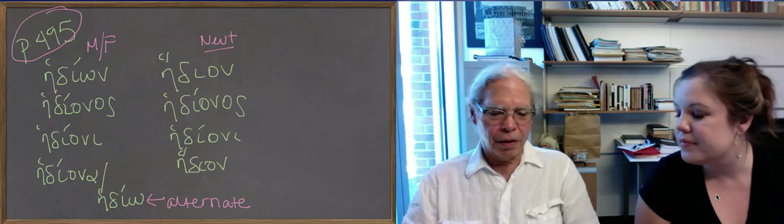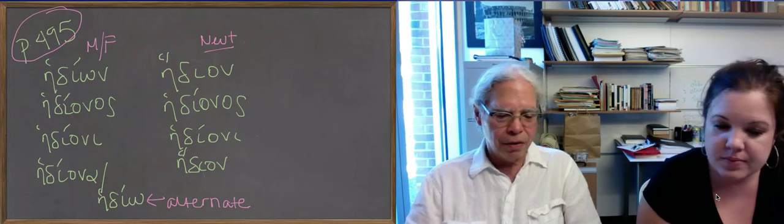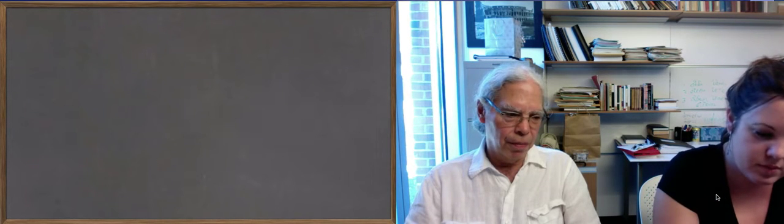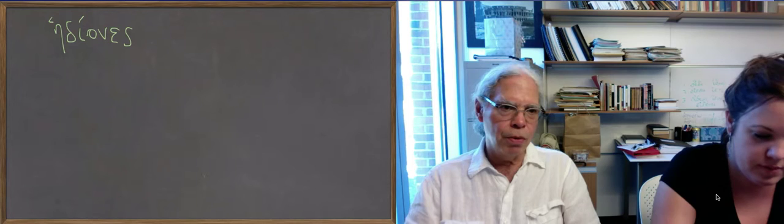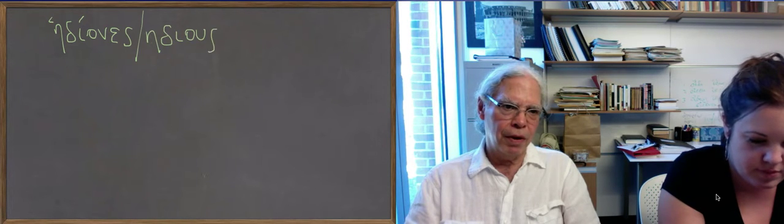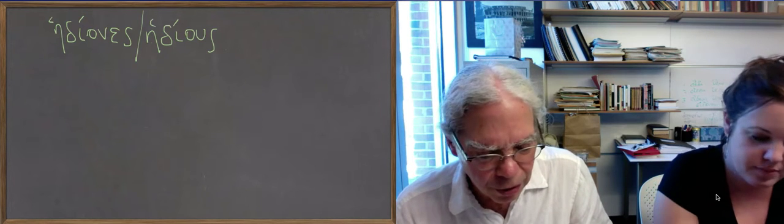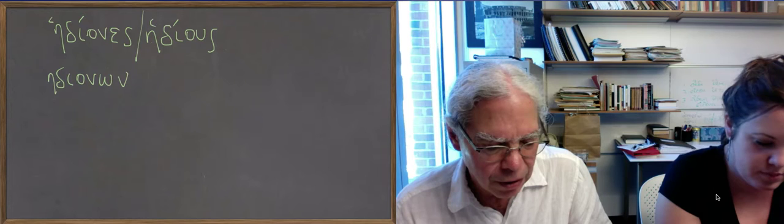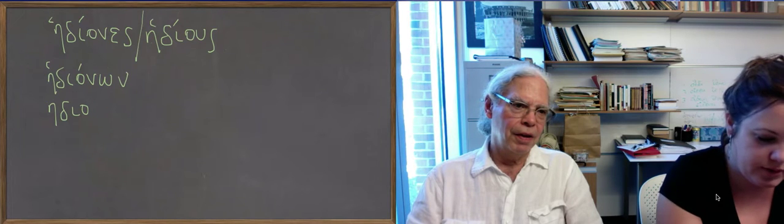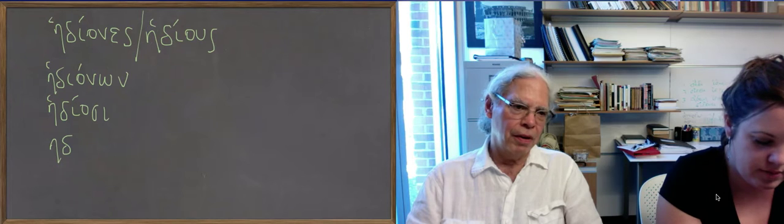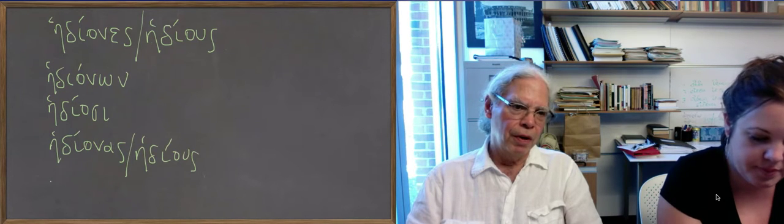So you see the same thing—the endings of the plural exhibit this as well. So the nominative masculine and feminine plural is hedionones, an expectable form. But then you also get hedius, which is contraction of the omicron and the epsilon through nasalization. And then you get hedionon for the genitive plural, hediosi for the dative plural, and then hedionas and hedius for the accusative plural.